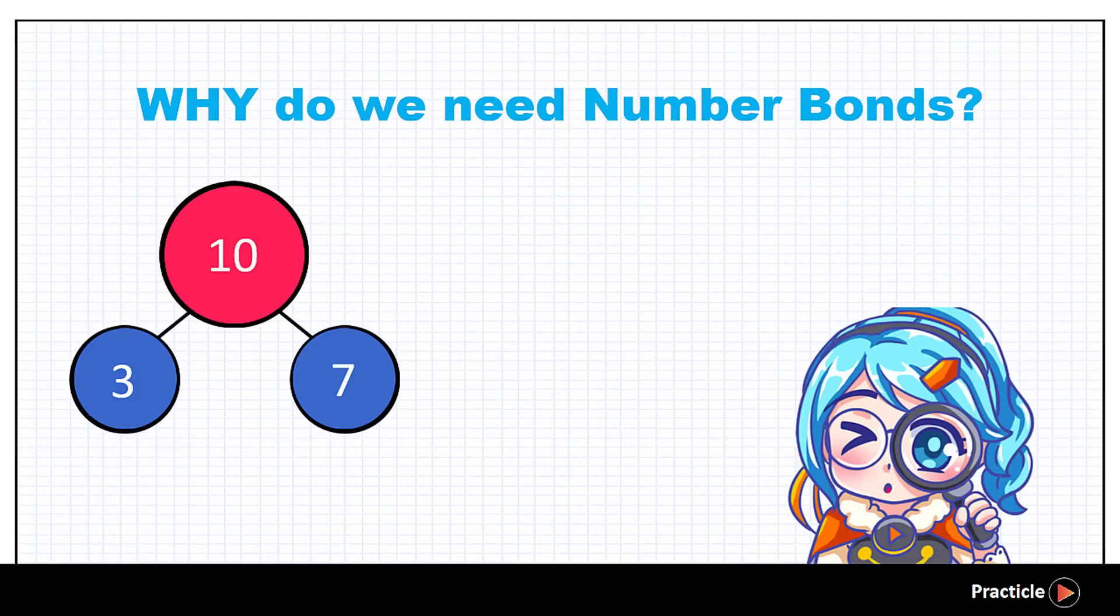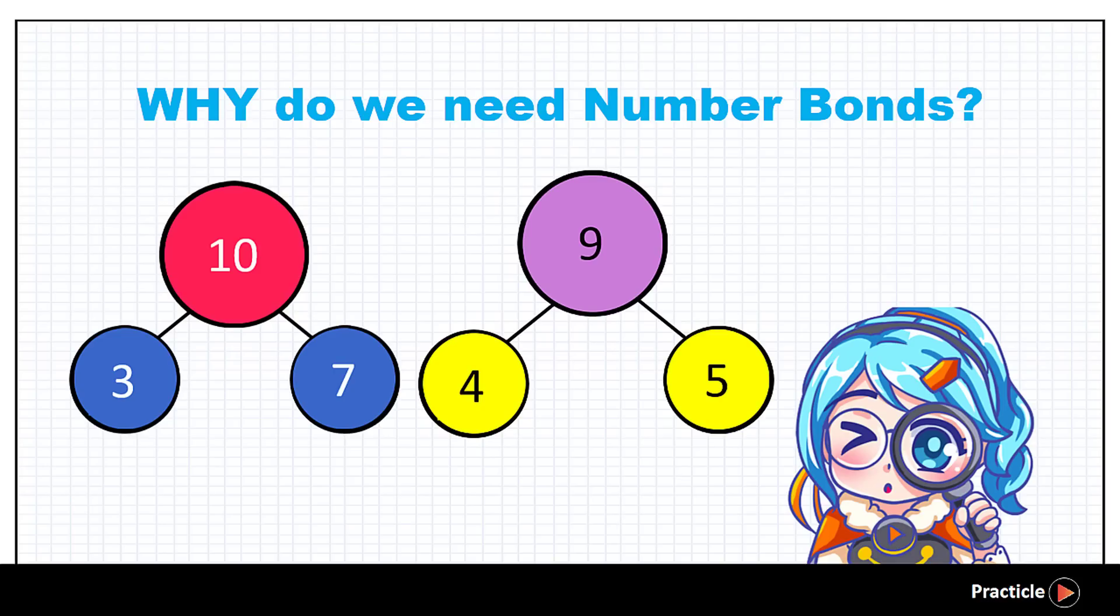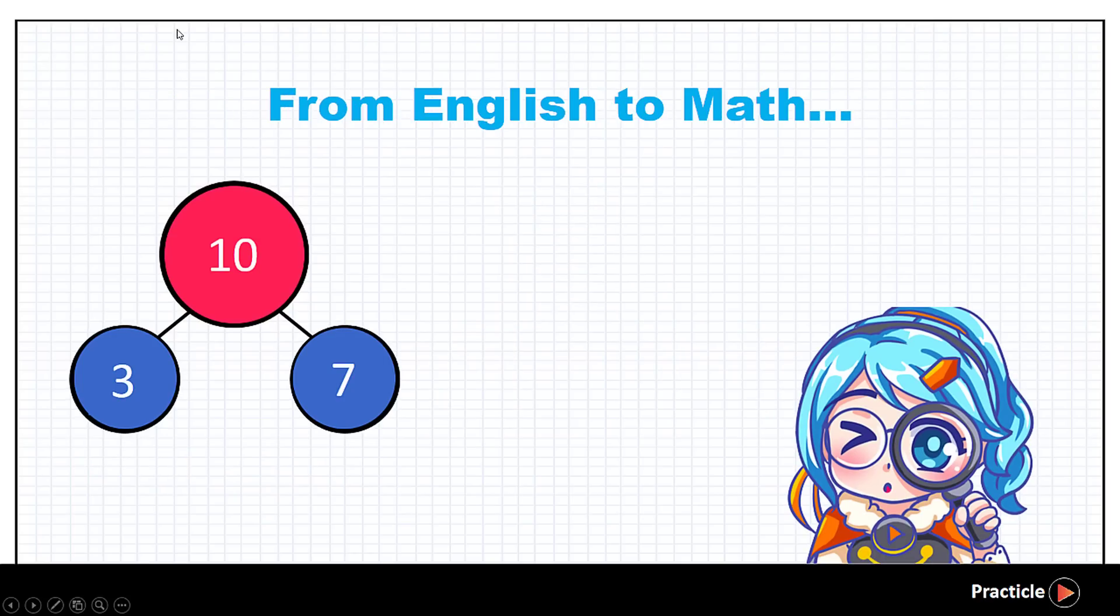Do you see why we need to learn number bonds now? Looking at the 2 number bonds that we made earlier on, can you see that these number bonds are like pictures that help us with addition? The first number bond tells us that 3 and 7 make 10. And we can translate this into a math addition sentence. Let's see how we do that.